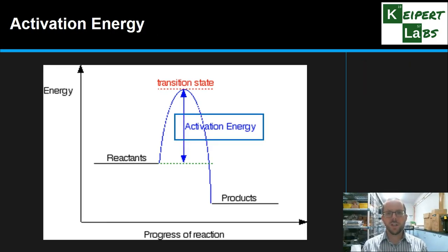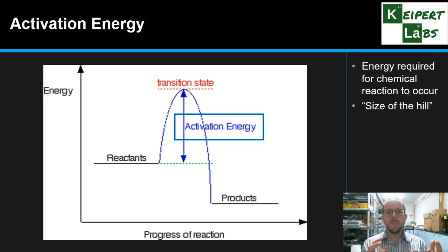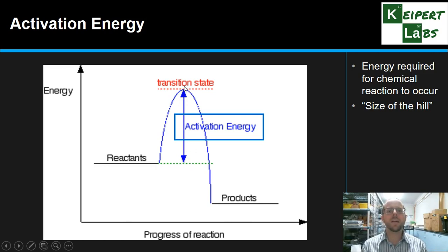Let's take a look first at activation energy — we'll unpack this further in a subsequent video on collision theory. But essentially, activation energy is the energy required for the chemical reaction to occur. It's the input that has to go in for the reaction to happen. If we consider this like going up and over a hill, the activation energy is the size of that hill — how far up it needs to go in order for the reactants to roll back down to the other side. The higher this is, the more energy is needed for that reaction to start.